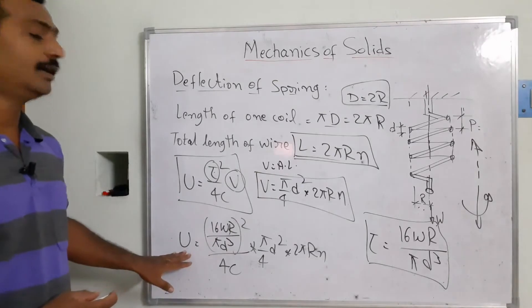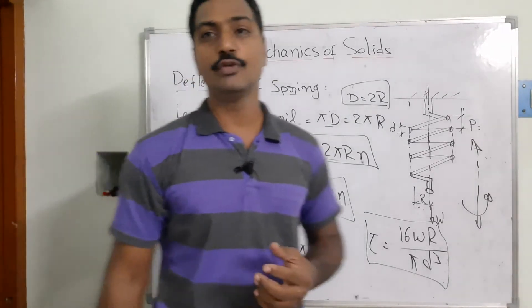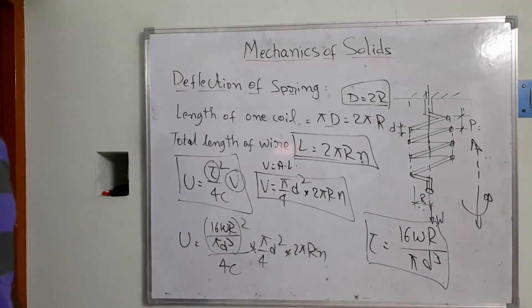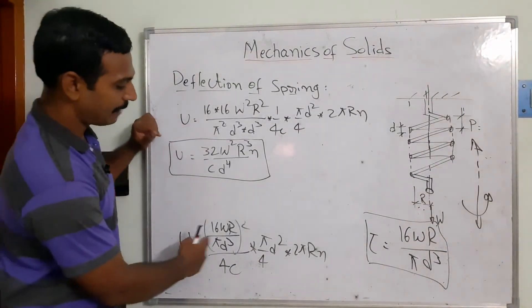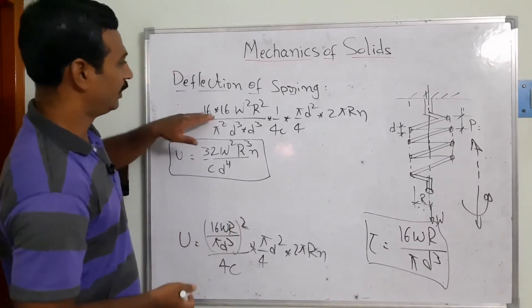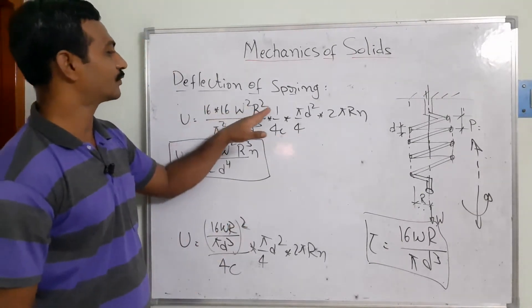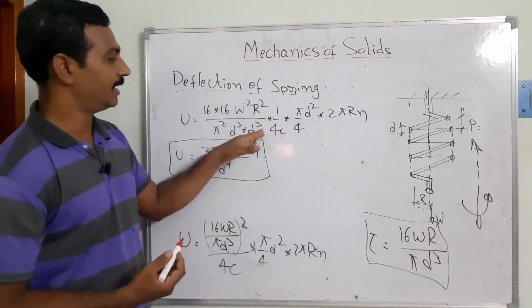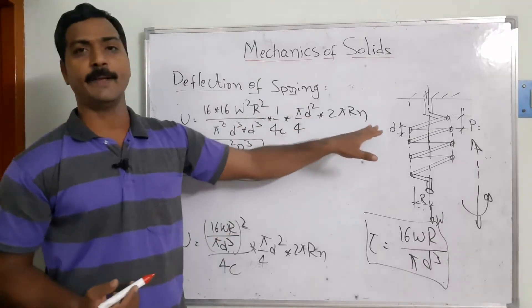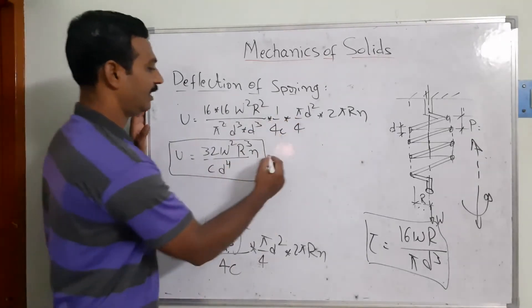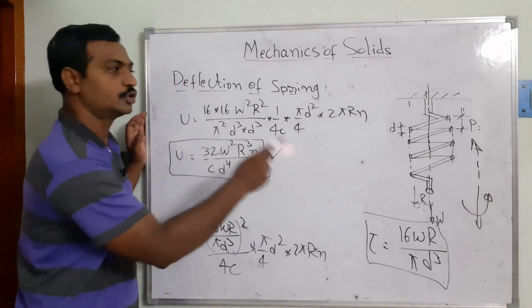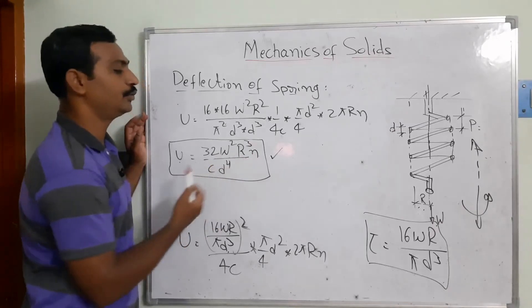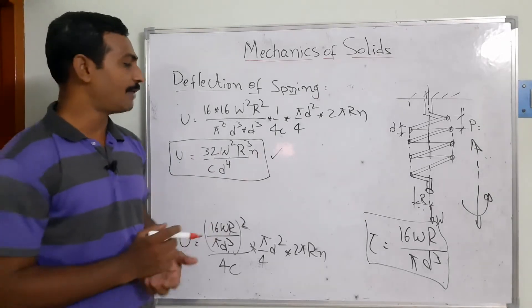Simplifying the strain energy expression by expanding the square and collecting terms, we get the strain energy stored inside the spring: U = 32W²R³n / (C × d⁴). From this, we will equate the work done on the spring to find the deflection.